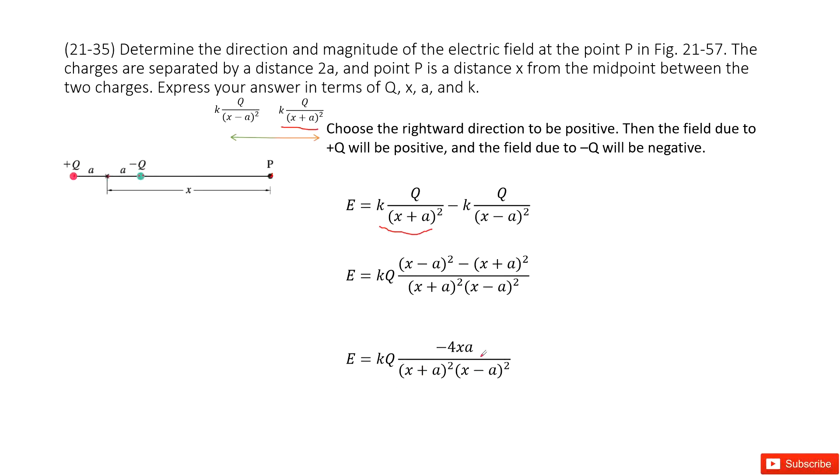Finally, we get the answer that looks like this one. The negative sign tells us the direction for this electric field is pointing to the negative direction. So now we get the answer there.